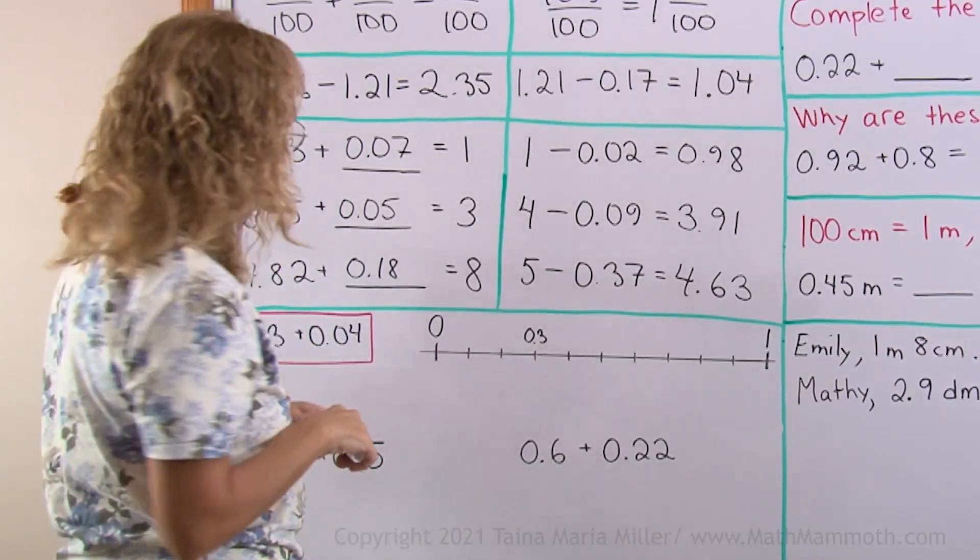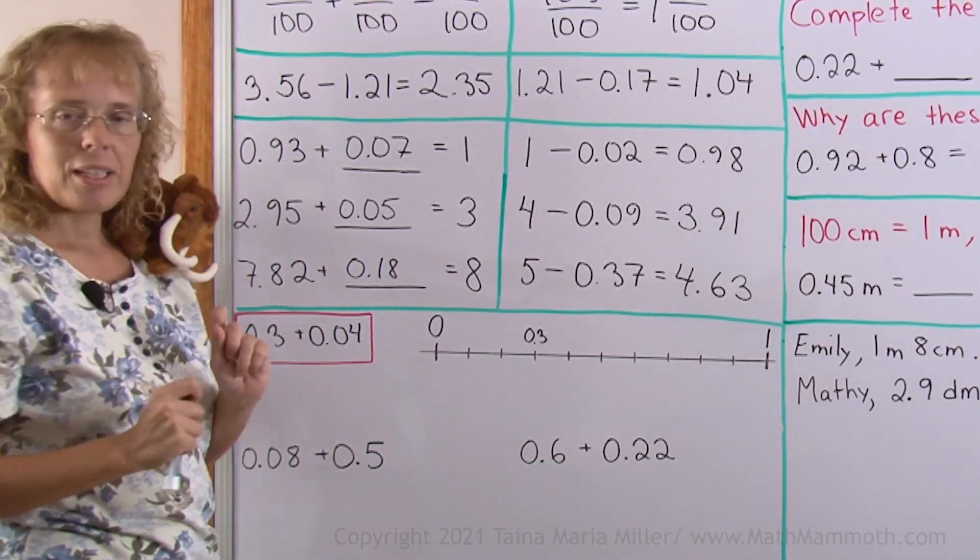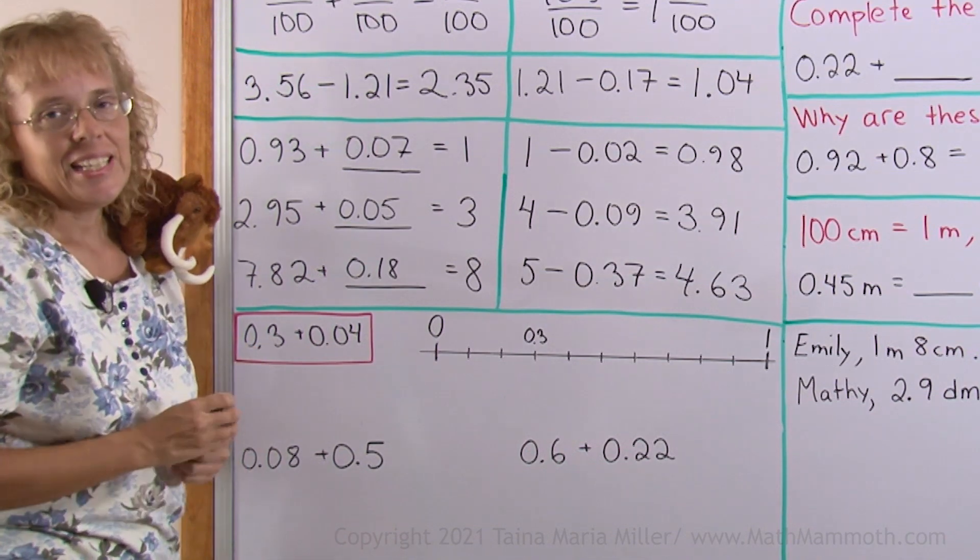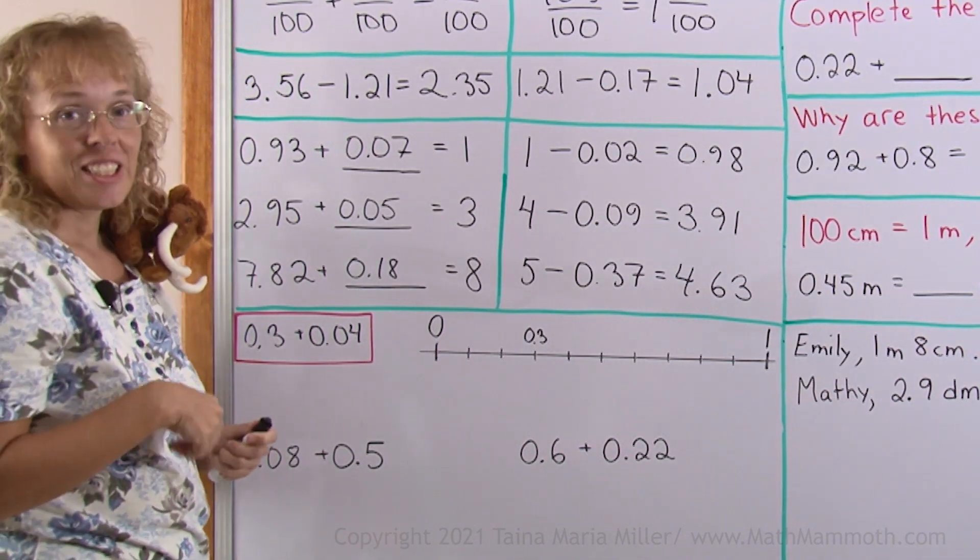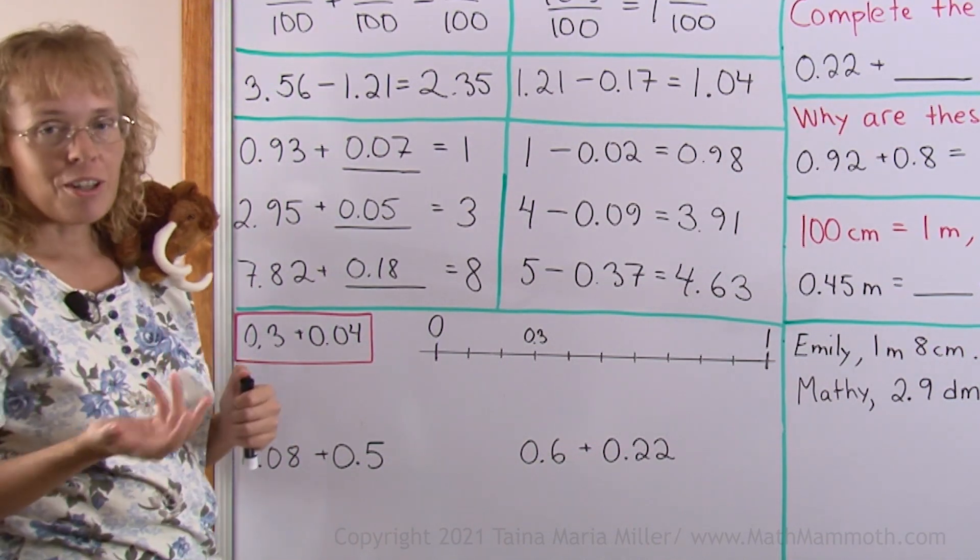So those were all easy, but now we come to a tricky problem, it's here, 0.3 plus 0.04. Now there's many students who answer 0.7 or 0.07, but both are wrong.